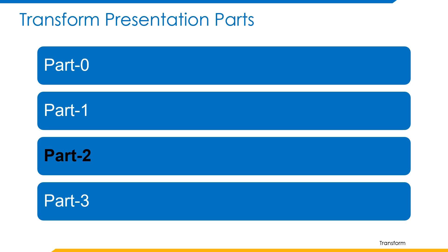Let's begin part 2 of transform block where we'll be understanding some of the transform operations like get end of string transform, get reference identity attribute transform, and a few other transform operations.